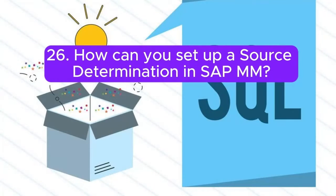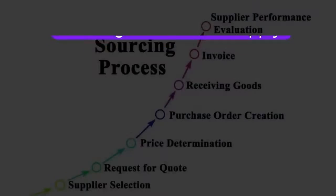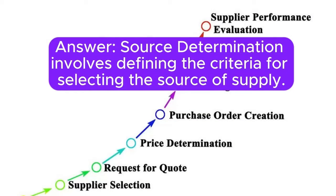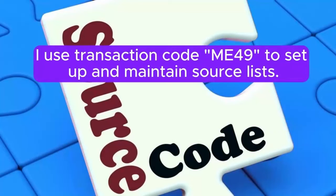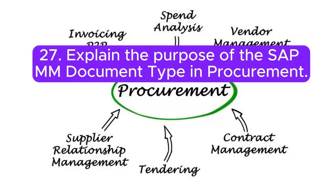Question 26: How can you set up source determination in SAP MM? Answer: Source determination involves defining the criteria for selecting the source of supply. I use transaction code ME49 to set up and maintain source lists.